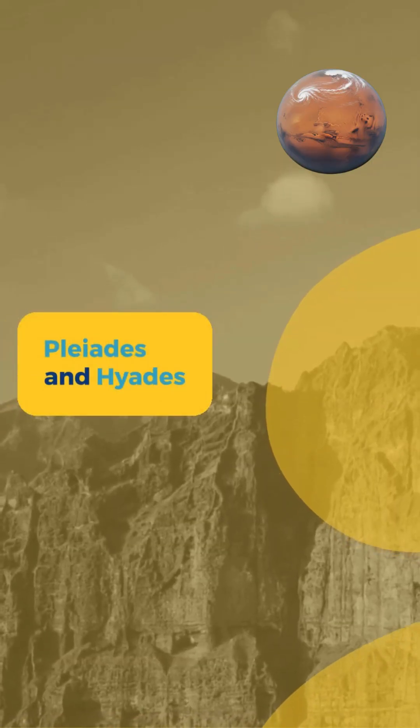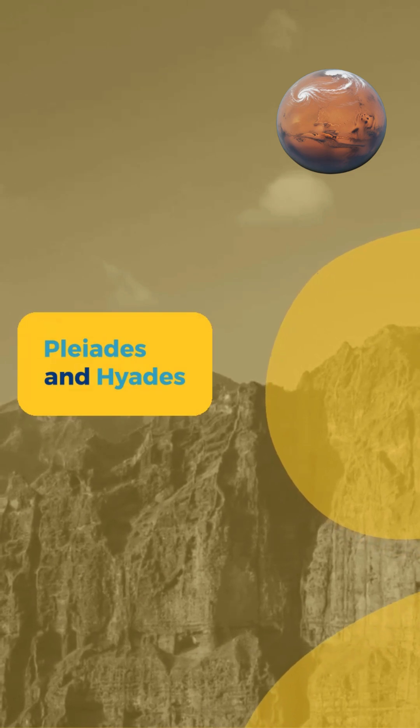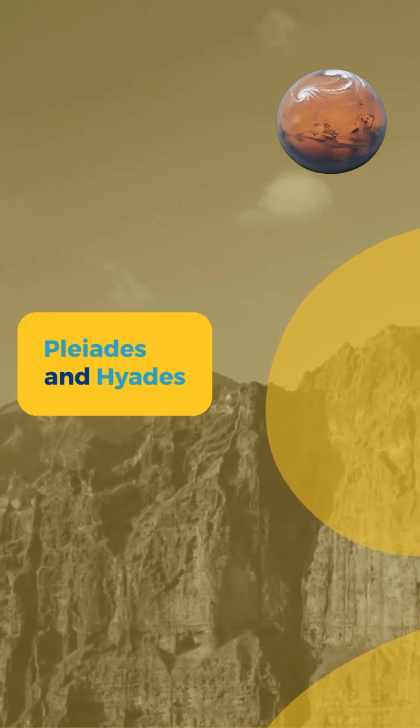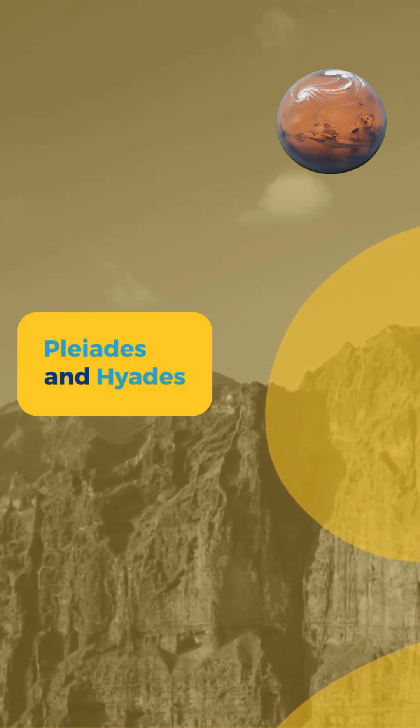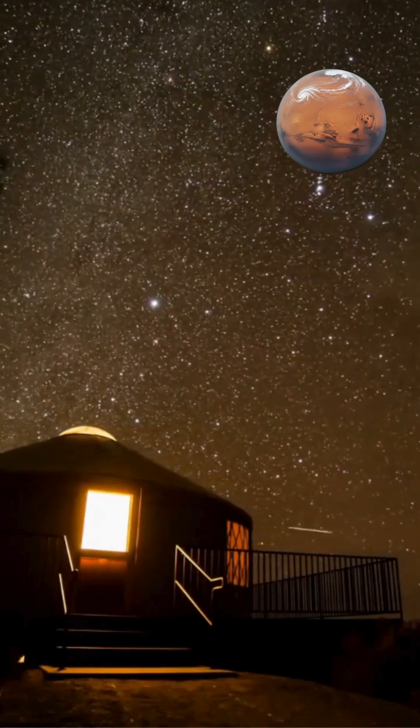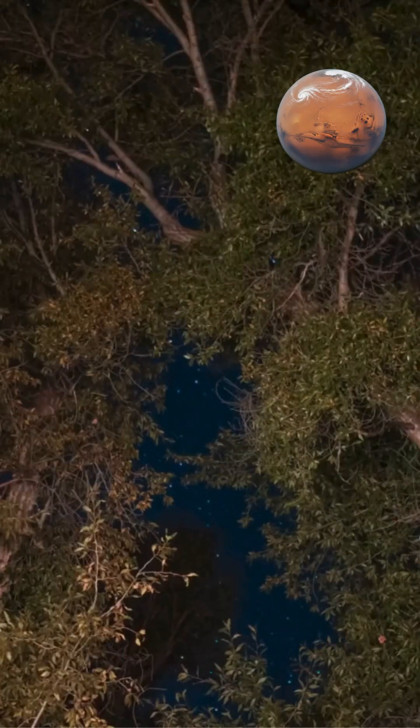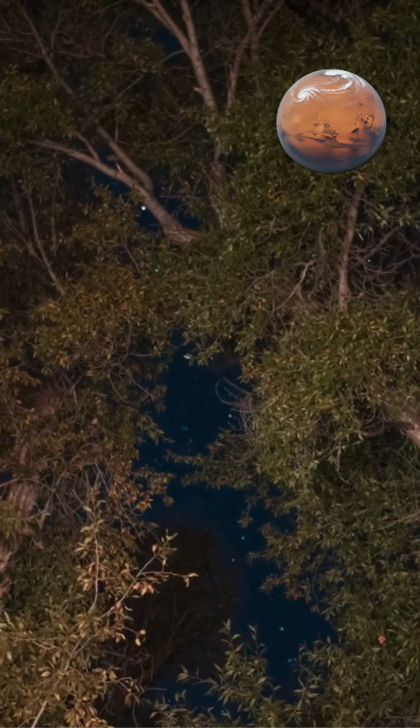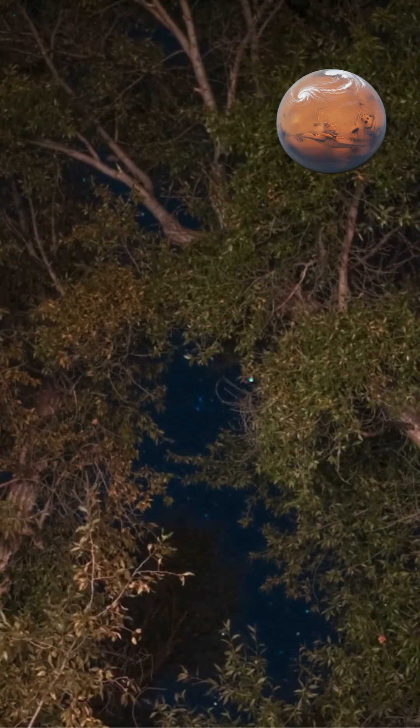Open clusters like the Pleiades and Hyades represent relatively young stellar groupings still traveling through space together. Most open clusters eventually disperse over millions of years as they interact with other stars and accumulate orbital energy through gravitational encounters.